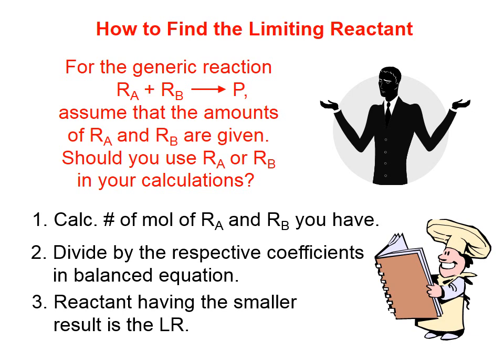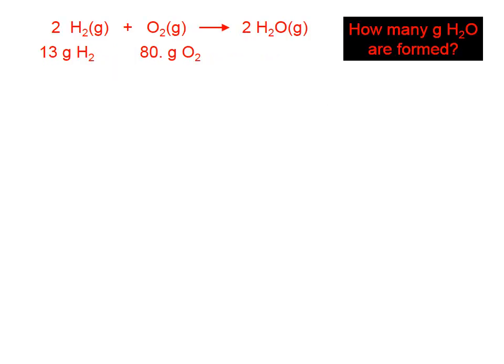Here are the steps that I use. First, calculate the number of moles of reactant A and reactant B that you have. Second, divide those numbers of moles by the respective coefficients in the balanced equation. And thirdly, the reactant that has the smaller result is the limiting reactant. So let's try this problem.